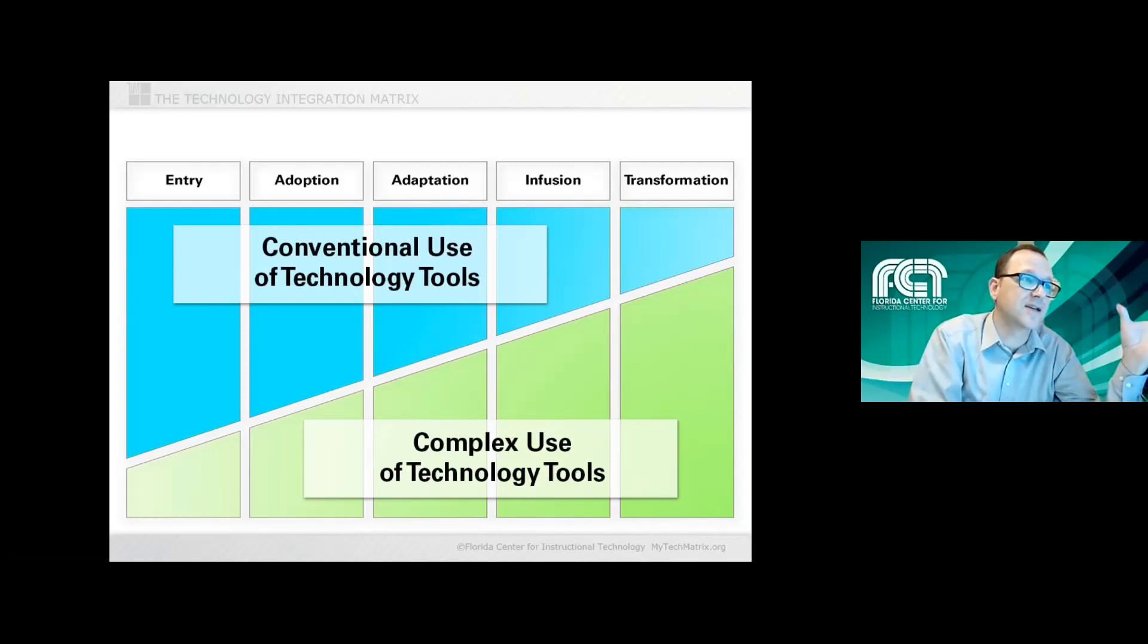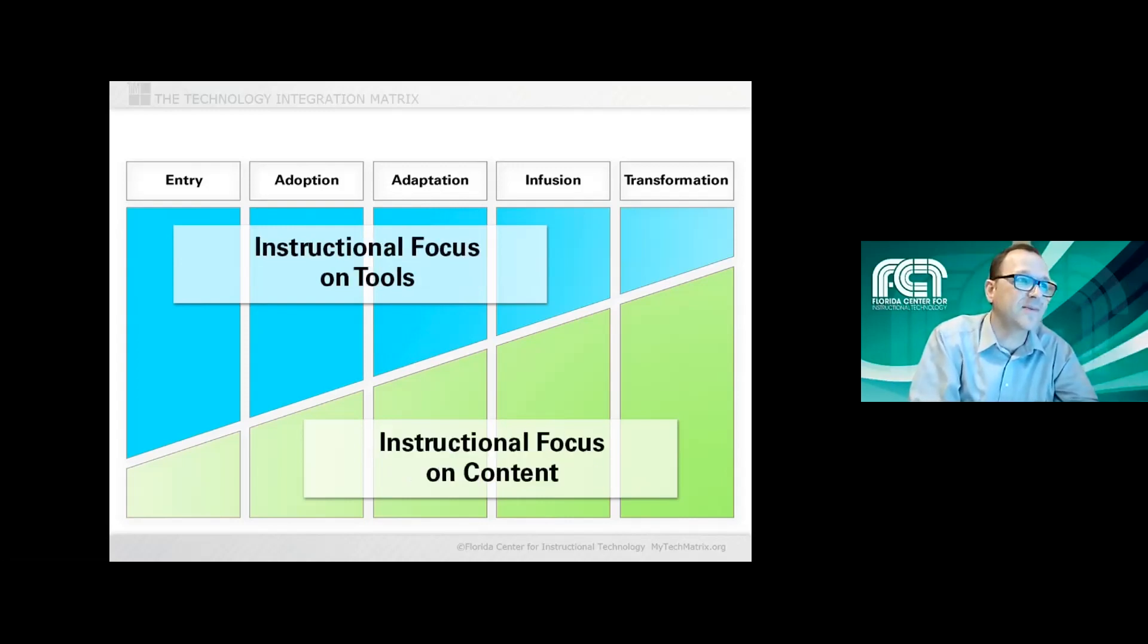You're also seeing a shift as you move toward the right, toward a more complex and unconventional use of technology tools. And that is getting to that creative, dynamic classroom environment where the kids are empowered to make choices about what technology is being brought in. And then finally, we see a shift in instructional focus. Usually in an entry level lesson, a significant part of the lesson is going to be about what tools we're using and how to use them, where a transformation level lesson is much more likely to not reference the technology tools at all, and only talk about the learning that's going on. And it's just sort of a consequence of where you're at on the kind of lesson that you're doing.